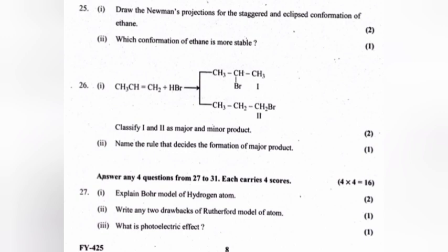Classify 1 and 2 as major and minor product. 1 is the major product and 2 is the minor product. Name the rule that decides the formation of the major product. Answer: Markovnikov's rule.